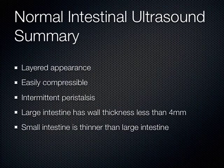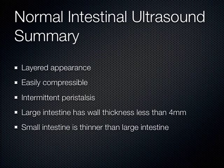To summarize what we've talked about so far: normal intestinal ultrasound — which you're going to see today — has a nice layered appearance, is easily compressible, and you should see intermittent peristalsis. Large intestine wall thickness should be less than 4 millimeters. Small intestine is less than that.